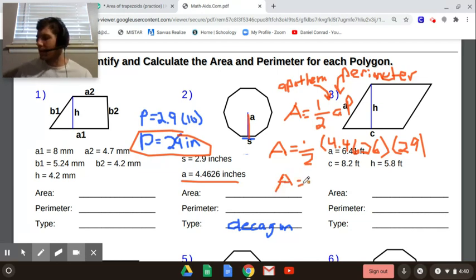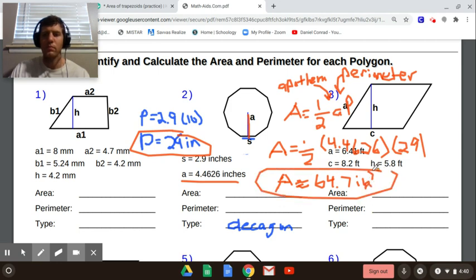So 0.5 times 4.4626 times 29. I got 64.7 approximately. I'm going to round to 64.7. It's 29 inches times 4.4626 inches. So we're going to be left with inches squared, which is good because this is area.